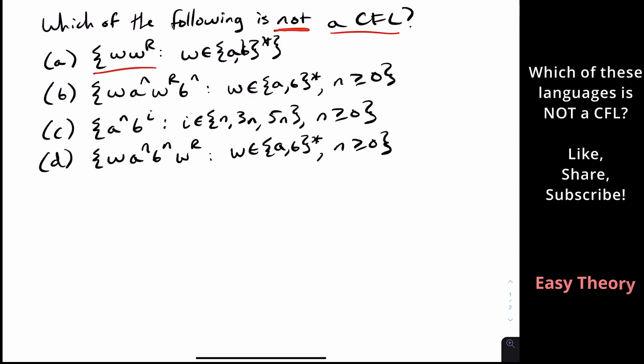We have the set of all palindromes over AB star, we have this language which is w a to the n, then the same string w reversed, then b to the n, where the exponent for the a and the b part is exactly the same. Then we have the language of a to the n, b to the i, where i is some multiple of n, either one, three, or five n.